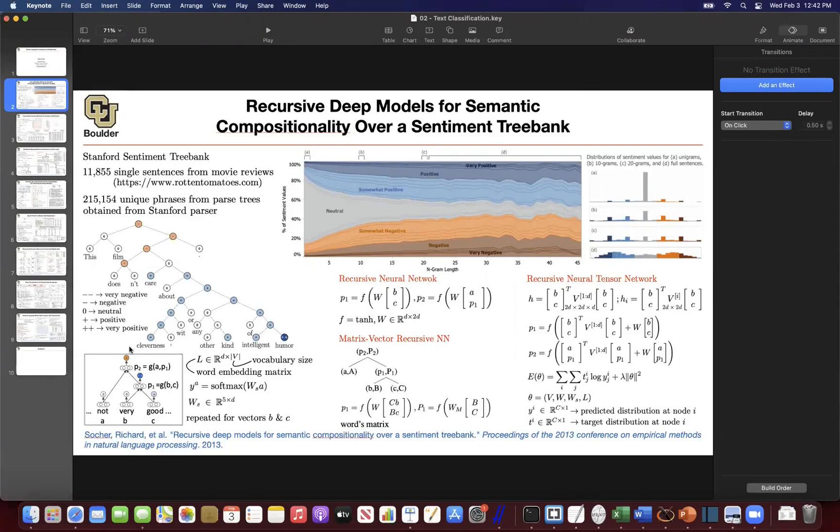But once you have that, the rest of it, the model that you write is going to be dependent on the tree structure. And then you keep merging words and nodes of the tree together until you end up with one vector in the end that you can use for classification purposes.